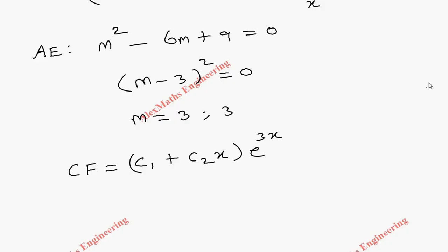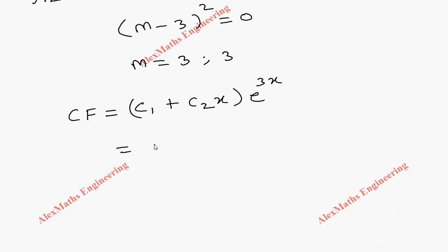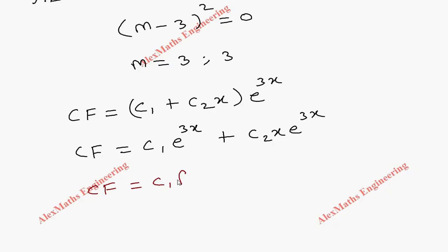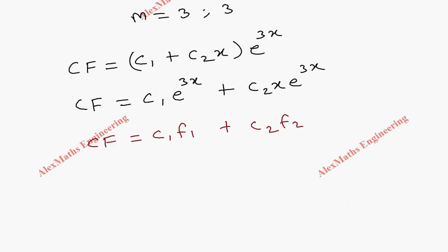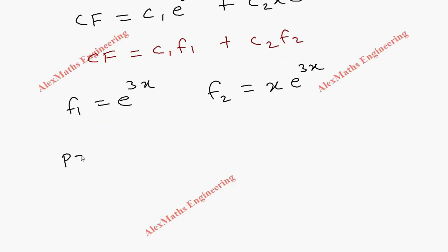Coming to the complementary function: CF = (c₁ + c₂x)·e^(3x), which expands to c₁e^(3x) + c₂x·e^(3x). Comparing with the general form c₁f₁ + c₂f₂, we get f₁ = e^(3x) and f₂ = x·e^(3x).